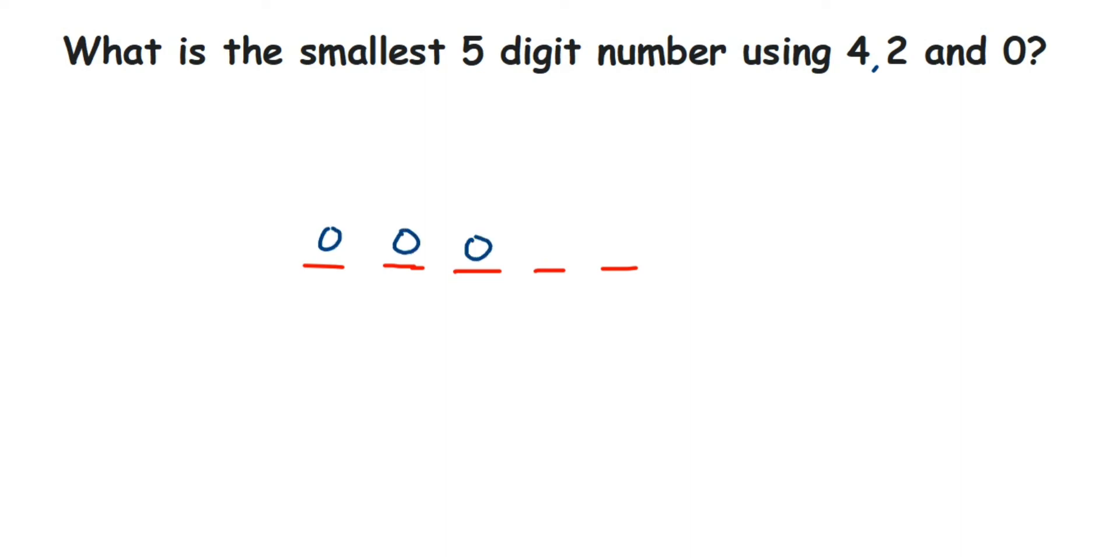The second smallest number here is two, then four. But if you observe, this will become a two-digit number because zero doesn't have value when you keep it in the beginning of any number. So these zeros will not be counted. This will become a two-digit number, not a five-digit number.